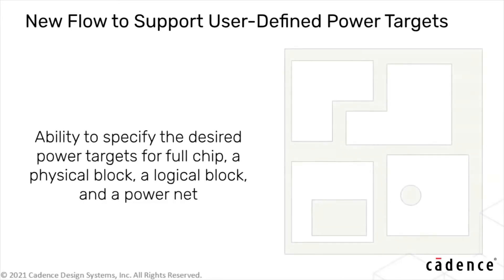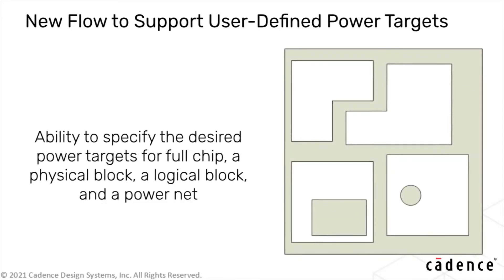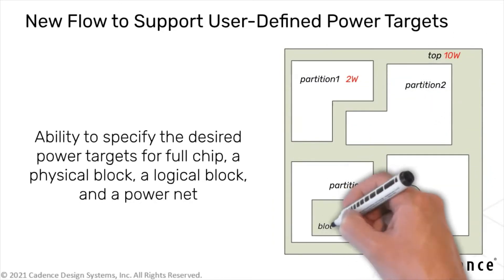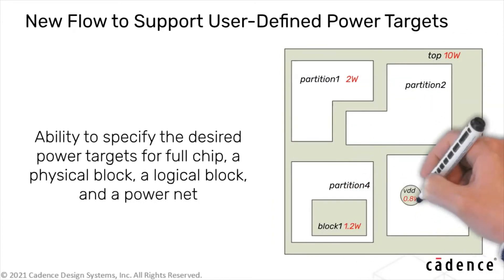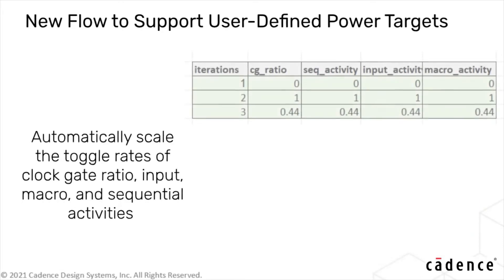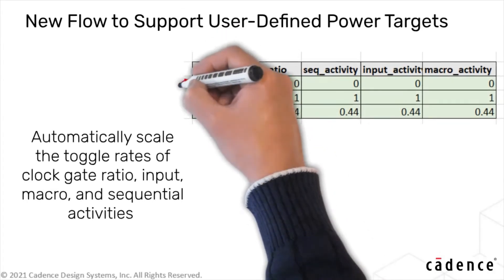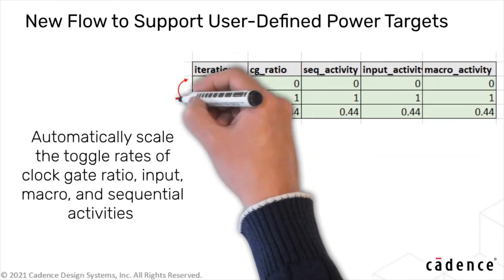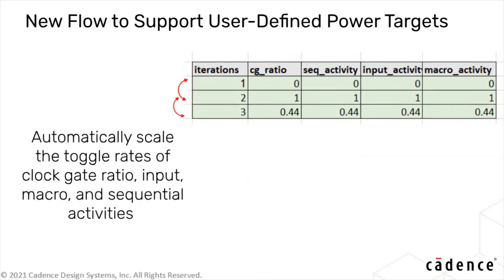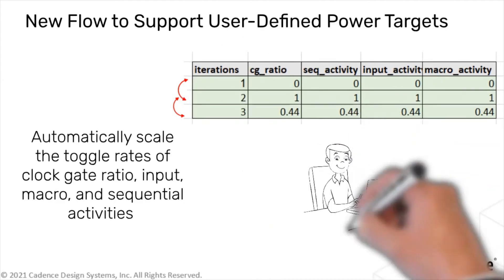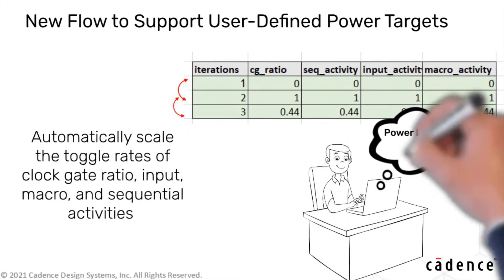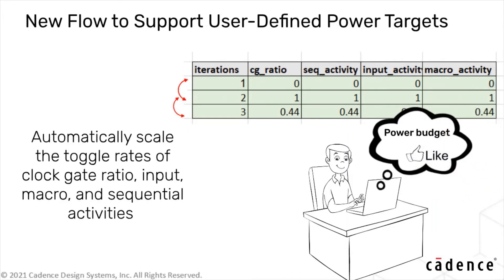The new power target flow gives users the ability to specify the desired power values for full chip, a physical block, a logical block, and a power net. When the power values are specified, Volta's will automatically scale the toggle rates of clock gate ratio, input, macro, and sequential activities. Thereafter, it will run multiple iterations using these activity values till the power targets are achieved. This flow makes it significantly easier to achieve the power budget for your design flow.